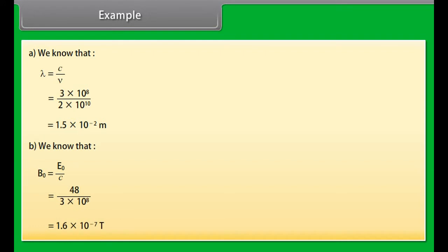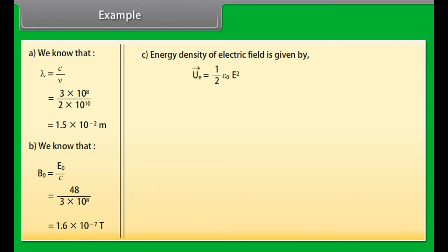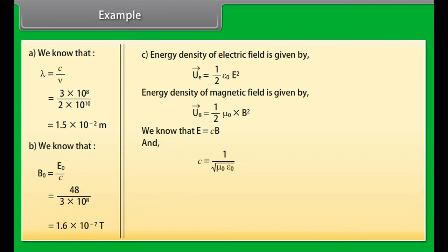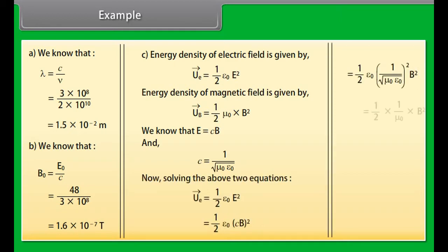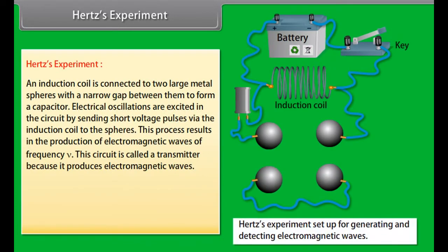We know that B naught is equal to E naught upon C. By putting and calculating the values we get amplitude of the magnetic field which is equal to 1.6 into 10 raised to the power minus 7 Tesla. Energy density of electric field is given by half epsilon naught E square. Energy density of magnetic field is given by half mu naught B square. We know that E is equal to CB and C is equal to 1 upon under root mu naught epsilon naught. On solving the above two equations we get average energy density of electric field equals the average energy density of magnetic field.